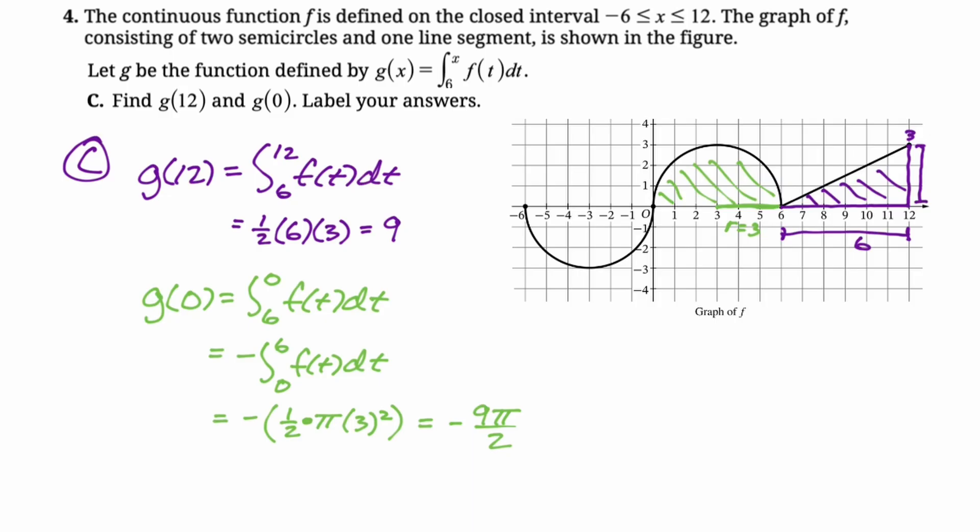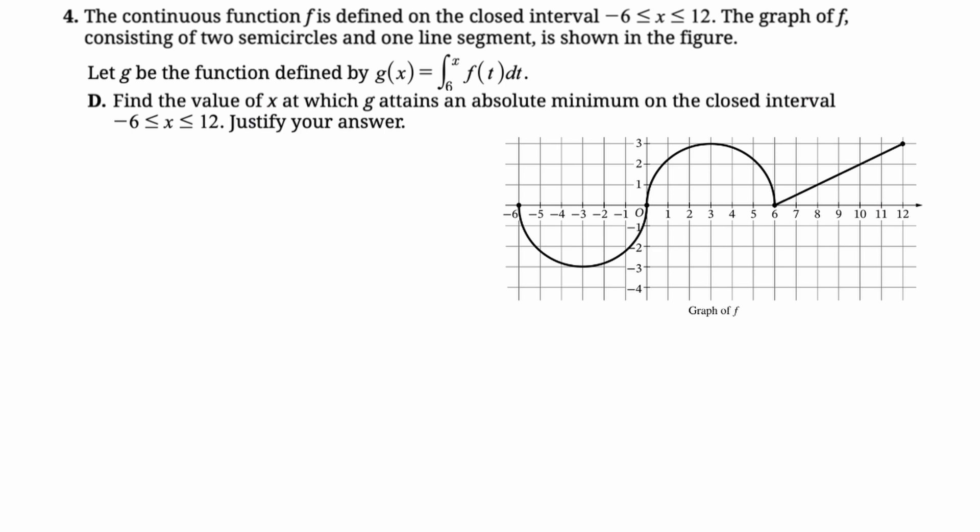And I guess we could leave that, but I think it's easy enough to say that's negative 9 pi over 2. So we found g of 0 and we found g of 12. Make a mental note of that, because I think we're going to need those in the next part.